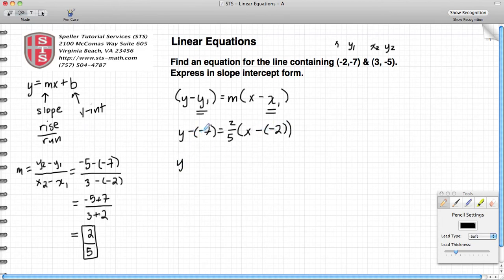y minus -7, where negative times a negative gives me a positive, equals 2/5 times x, where negative times a negative gives me a positive 2. I'm trying to get everything into y-intercept form here. So I want it in the y equals form, which means I need to subtract 7 from both sides. That leaves me with y equals 2/5 x plus 2 minus 7.